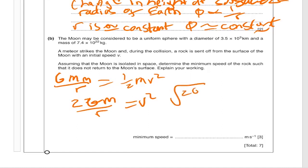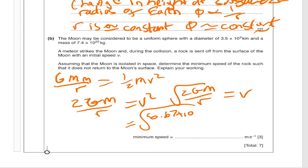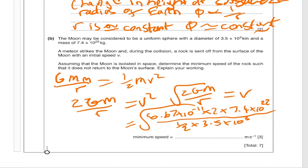So V equals the square root of 2GM over R. Substituting in: G is 6.67 times 10 to the minus 11, mass is 7.4 times 10 to the 22. Note this is the diameter, not the radius, so use half of 3.5 times 10 to the 3 kilometres — multiplied by 10 to the 3 to convert to metres. When typed into the calculator, this gives 2.4 times 10 to the 3 metres per second, which is two significant figures.